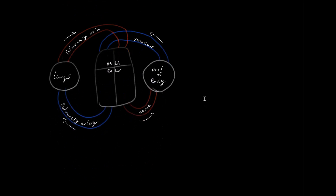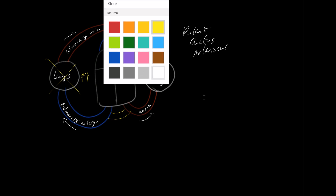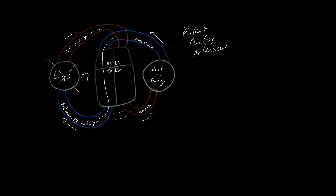Finally, the patent ductus arteriosus — 'patent' meaning it stays open after birth. The ductus arteriosus is a small vessel between the pulmonary artery and the aorta that allows the fetus to survive. Because the fetal lungs are filled with fluid, pulmonary pressure is very high, so blood from the vena cava bypasses the lungs and flows through the ductus arteriosus to the aorta.